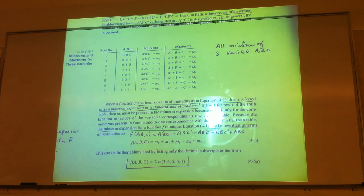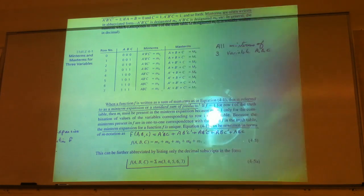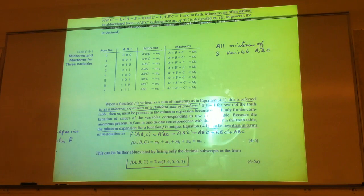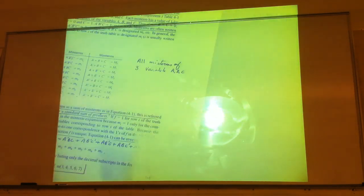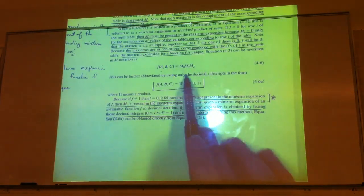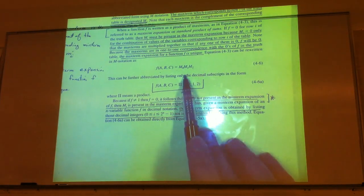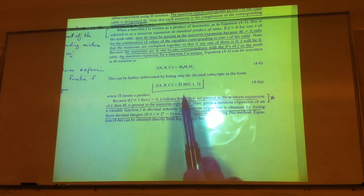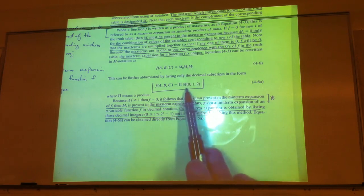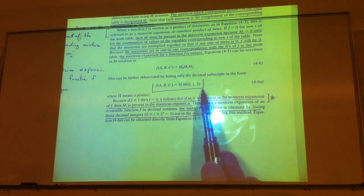So these are the min terms and max terms that we defined last time. For the max term expansion, instead of using 'a plus b plus c' we can replace it with M0. The reason we do that is so we can express the product-of-sums form of the function in terms of M notation rather than writing them out. So then we have the product of M0, M1, M2, and so on.